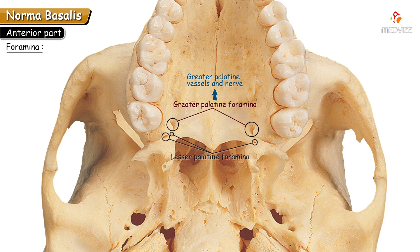The lesser palatine foramina are minute, tiny foramina — around 1 to 3 in number — located just behind the greater palatine foramen on each side, near the pyramidal process of the palatine bone. They transmit the lesser palatine vessels and nerves. So it is easy to remember: greater palatine foramen transmits greater palatine vessels and nerves, and lesser palatine foramen transmits lesser palatine vessels and nerves.